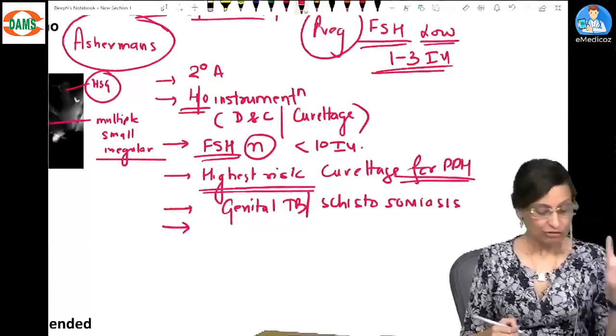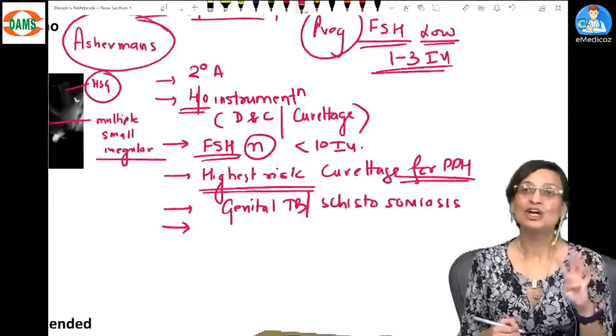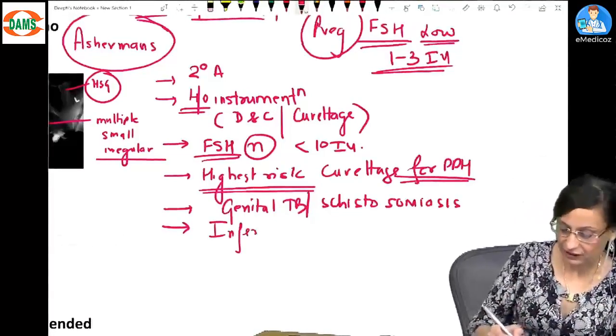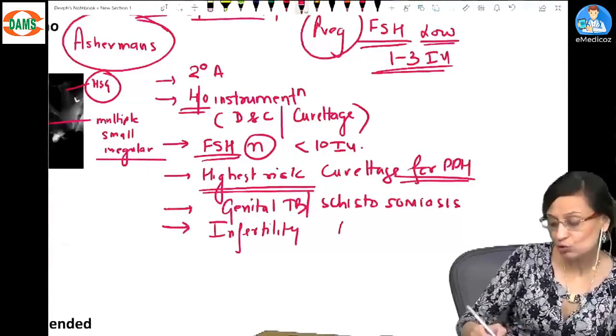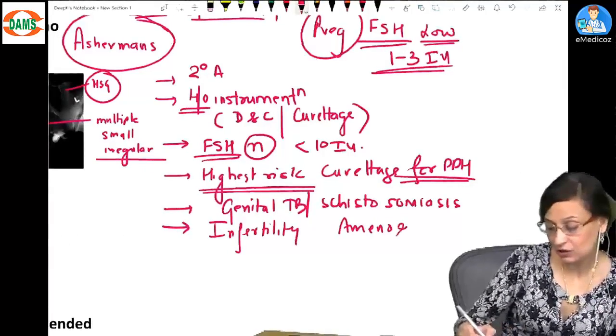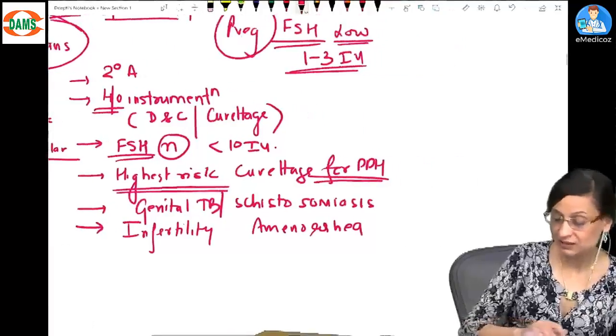Then fourth important thing: you all know they can present with infertility, you all know they can present with amenorrhea, they can present with hypomenorrhea.